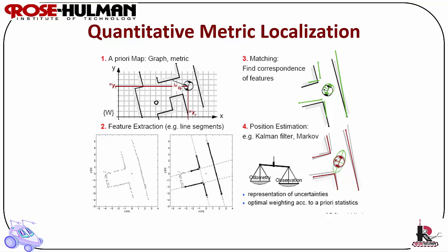Quantitative metric localization. In this method, there must be an a priori map with metric information. The robot then explores the world and uses sensors to extract features such as walls, halls, and doorways.